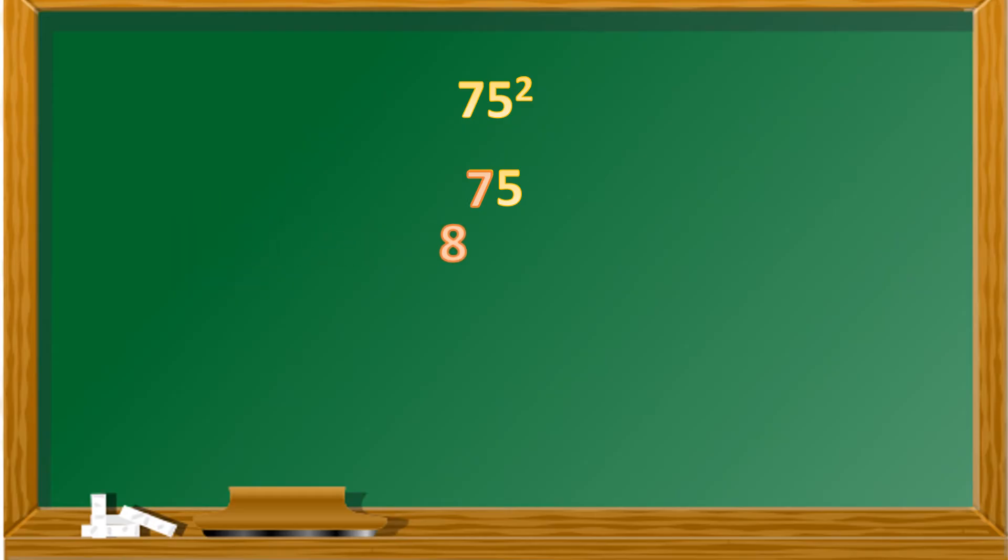Now multiply that 7 by 8 and get 56. The last step is to suffix 25 which will become 5625 which is the square of 75.